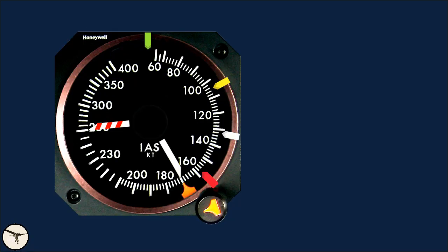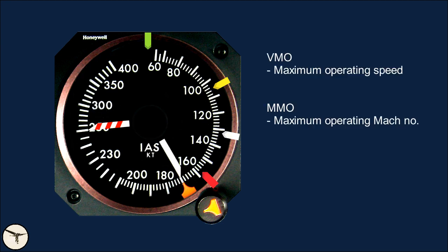The airspeed indicator has a pointer, often referred to as a barber pole. It indicates the lowest speed of VMO — maximum operating speed — and MMO, the maximum operating Mach number, which becomes a limitation at high altitude. VMO is 250 knots, and MMO is Mach 0.55.